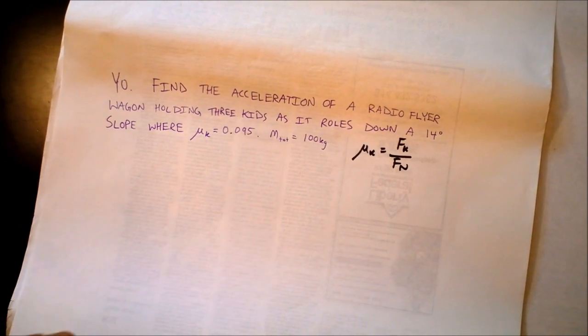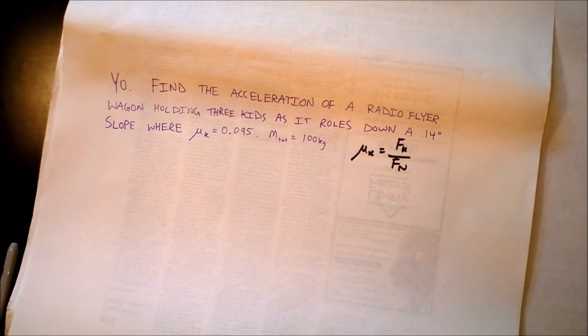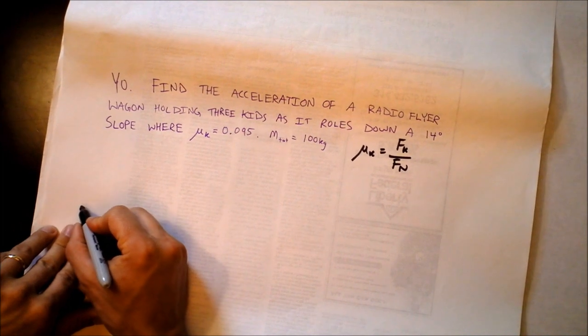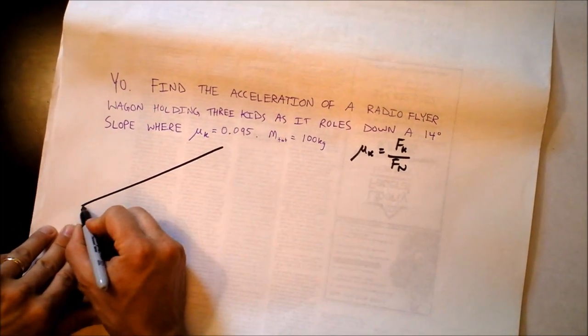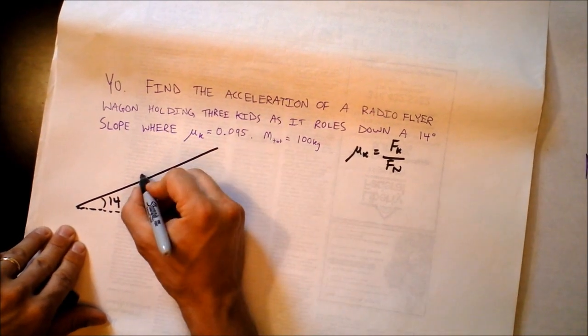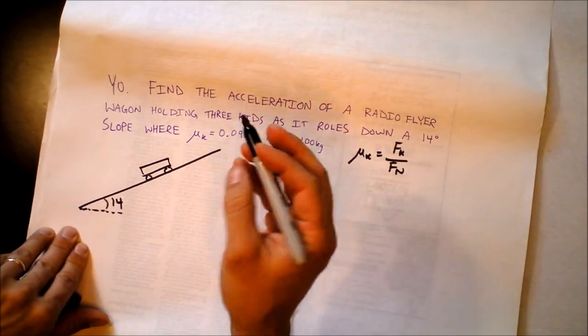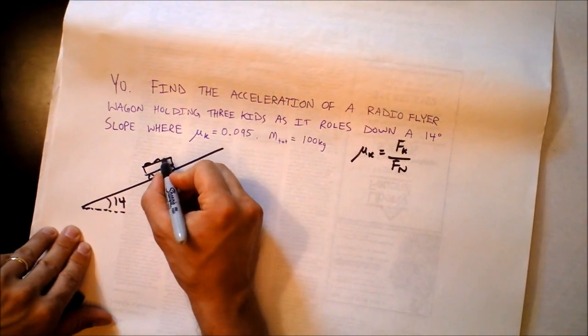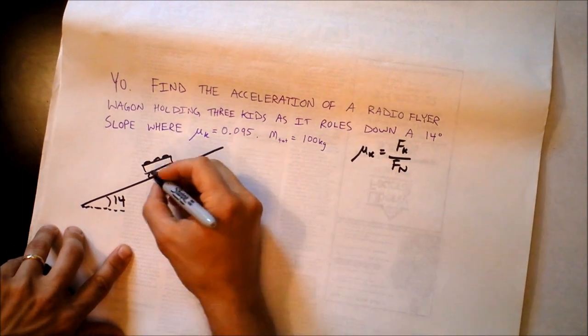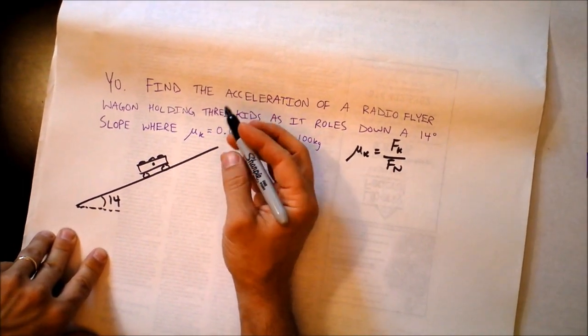So let's start by drawing that free body diagram as they requested. We will have ourselves a slope at 14 degrees. That's not a very steep slope. We'll exaggerate the slope a little bit. Radio flyer is going to be drawn kind of like this. And we're not even going to show the kids in there. Well, we can show them peeking out. And they are terrified because they'll be accelerating really fast.